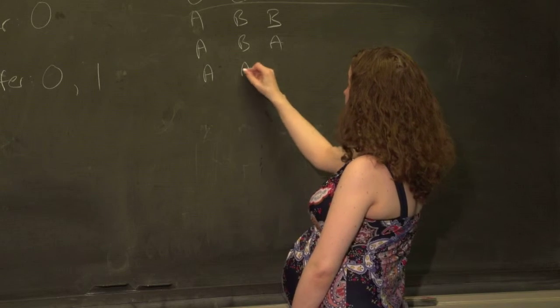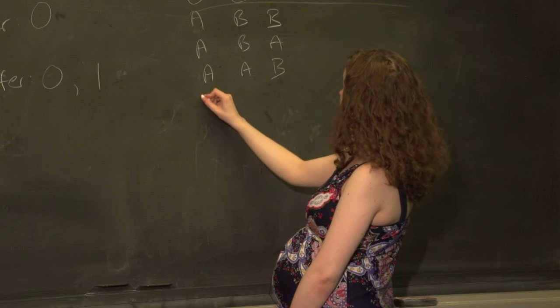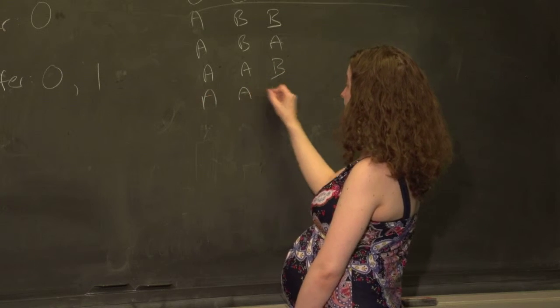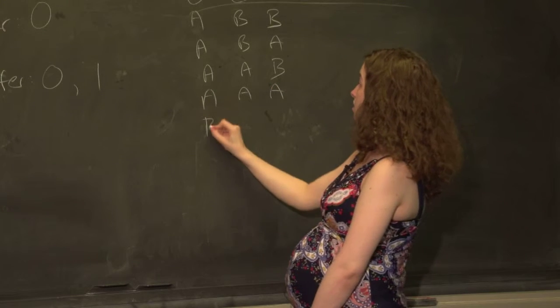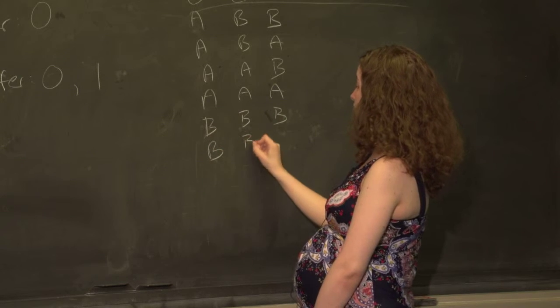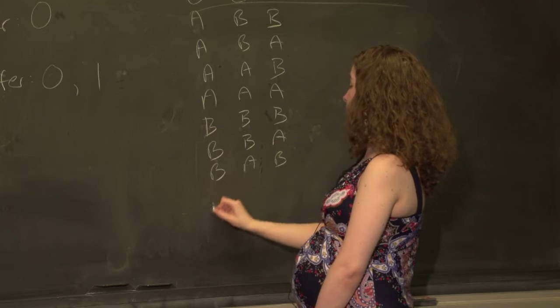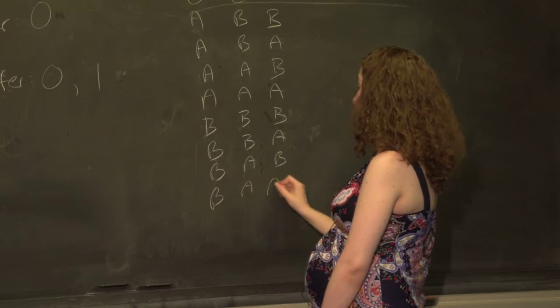I could have A, A, B. I could have A, A, A. Everyone could be assigned to group A. And then similarly, everybody could be assigned to group B. Could be B, B, A, B, A, B, or B, A, A. And those are all the possibilities.